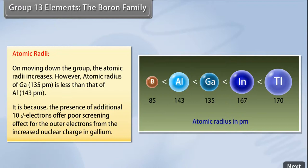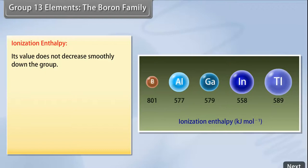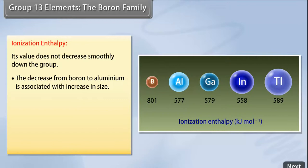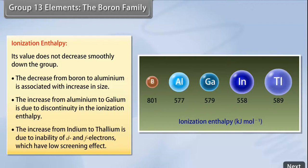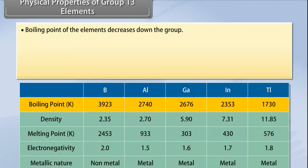Ionization enthalpy: Its value does not decrease smoothly down the group. The decrease from boron to aluminium is associated with an increase in size. The increase from aluminium to gallium is due to discontinuity in the ionization enthalpy. The increase from indium to thallium is due to the inability of d and f electrons, which have low screening effect.